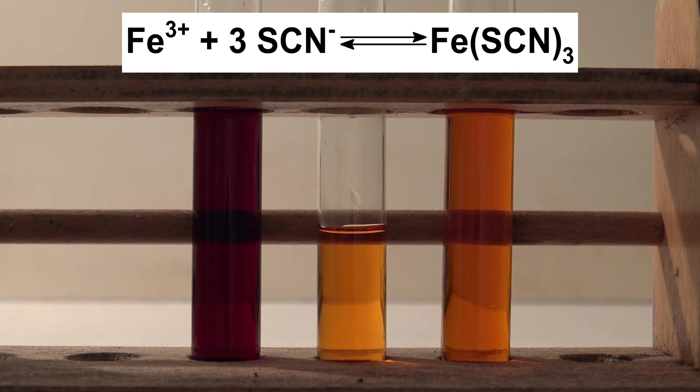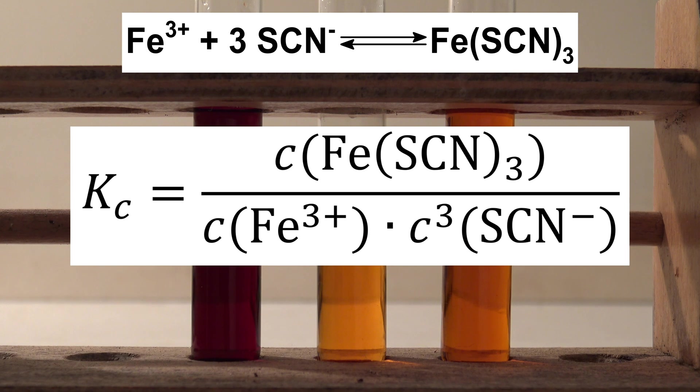The law of mass action describing this reaction looks like this. The equilibrium constant Kc is calculated by multiplying the concentrations of the products and dividing it by the product of the concentrations of the educts. Stoichiometric numbers like the three in front of the thiocyanide ions are added as exponents.